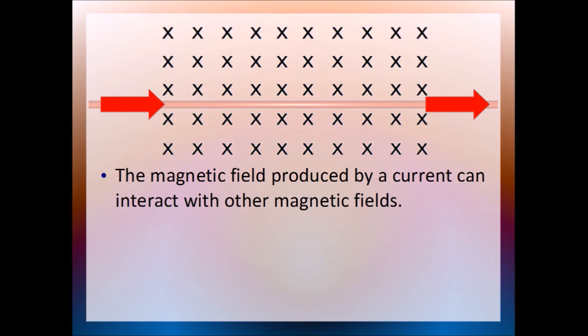Because any current-carrying wire generates its own magnetic field like that, funny things happen when you put such a wire into an already existing field. Here we have a magnetic field going straight into the screen, shown by the crosses. There's a copper wire passing through it at right angles to the field lines. An electrical current flows along the wire from left to right.